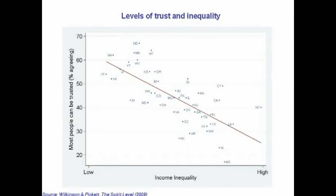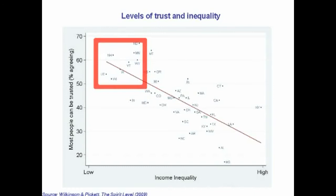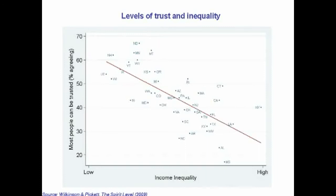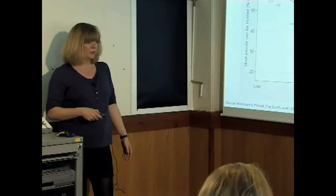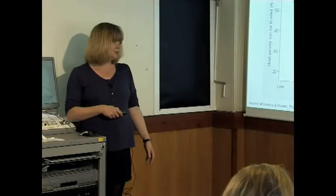Let's start with trust. This is trust for US states — how many people in each state think other people can be trusted. Up here you've got states where around 60% of the population think you can trust other people. Down here, people really don't trust each other. The lowest of all is Mississippi, at only 16%. And I think we all saw the consequences of that in 2005 when Hurricane Katrina hit New Orleans — we saw exactly what it means to have a lack of trust among people.